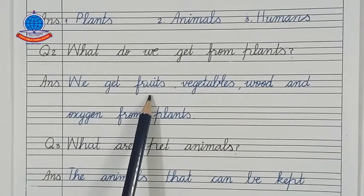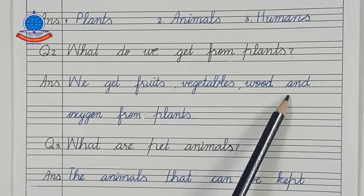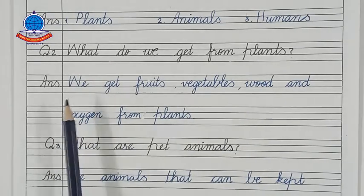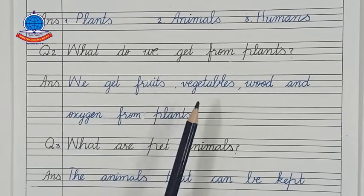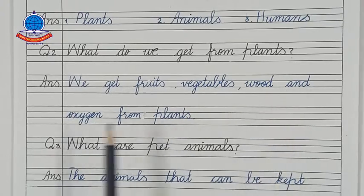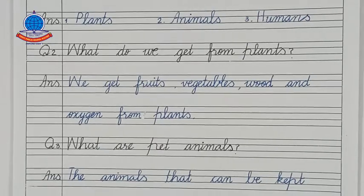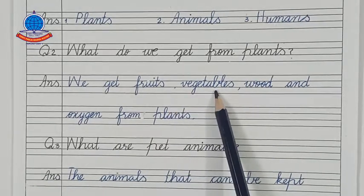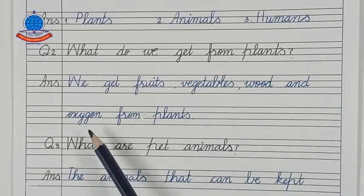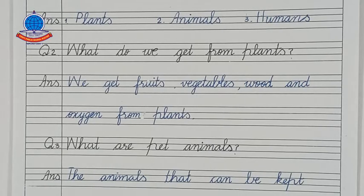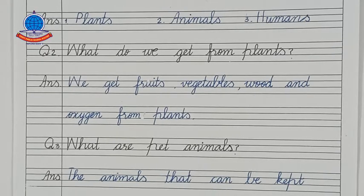We get fruits, vegetables, wood and oxygen from plants. Fruits यानी फल मिलते हैं, vegetables यानी सब्जियां मिलती हैं, wood यानी लकड़ी मिलती है, and oxygen — जो हमारे सांस लेने के लिए, ज़िन्दा रहने के लिए, बढ़ने के लिए बहुत ज़्यादा ज़रूरी है. Wood से हम different चीज़ें बनाते हैं, furniture बनाते हैं, और लकड़ी को जला के उससे heat लेते हैं ठंडे मौसम में. इस तरह plants हमारे लिए बहुत ज़रूरी हैं.